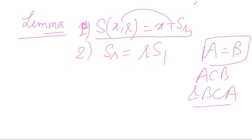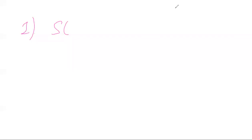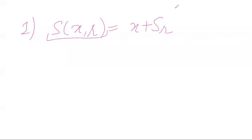We will take a point in this. We are talking about the first part — we will prove the first statement: S(x,R) equals x plus S(R). Let y belong to S(x,R) be any arbitrary point. If and only if — when a point belongs to the ball in a normed linear space, the distance between y and x is less than R.